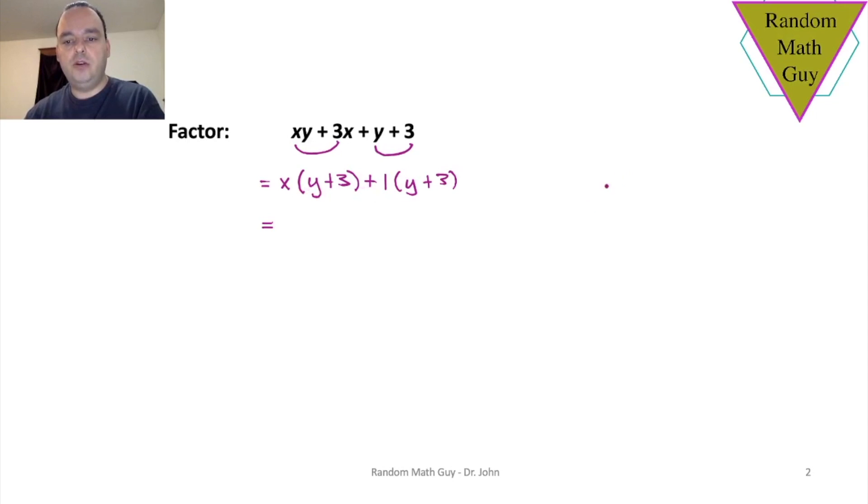I'll put something on the side here as an analogy. If I said to you XA plus 1A, of course the 1 is a little bit redundant, but if I had that for you as a factoring question, what would you do in the previous video? Well, they have A in common, so you would take the A there and you'd be left with X plus 1.